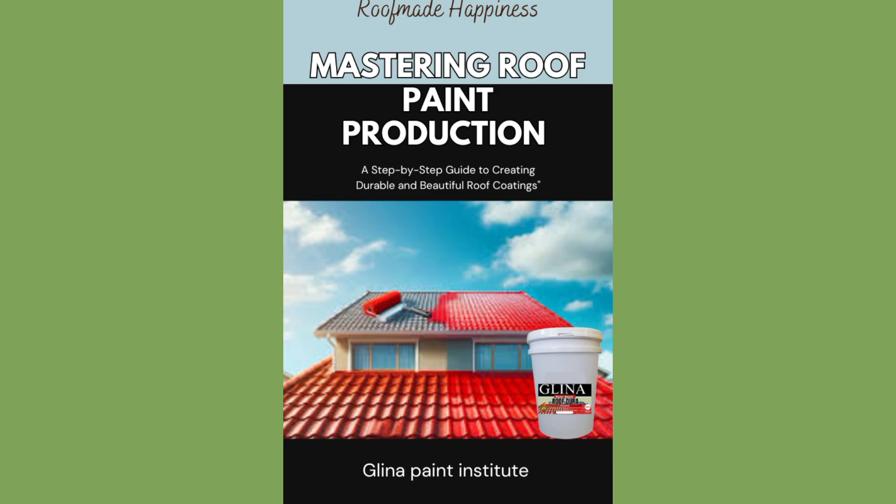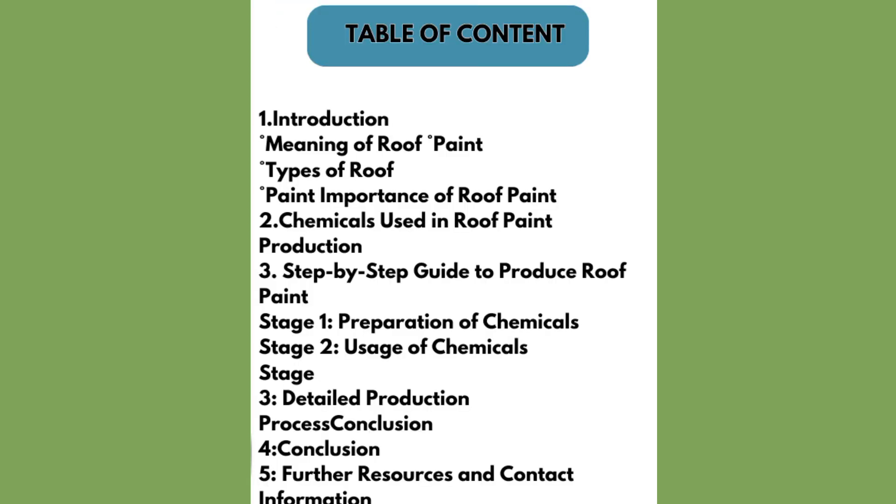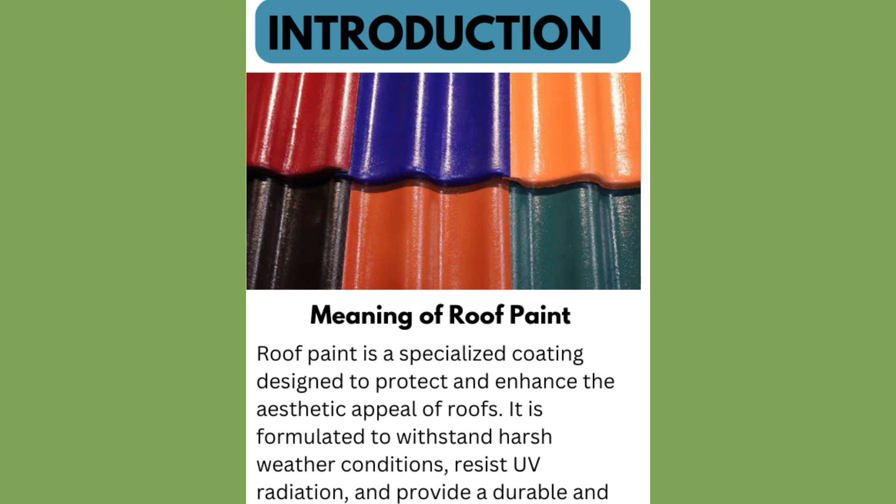Now let's talk about the essential chemicals needed to make roof paint. Number 1: Water — because it's a water-based roof paint, water is needed as the mixing medium. Number 2: Titanium dioxide. Number 3: Color — a water-based color of your choice. Number 4: Aluminium silicate. Number 5: Geniplex. Number 6: Defoamer. Number 7: Acrylic. Number 8: Nitrosol, plus the remaining chemicals, which you will get to read about in the e-book. Each of these chemicals plays a vital role in ensuring your roof paint is durable, vibrant, and effective.